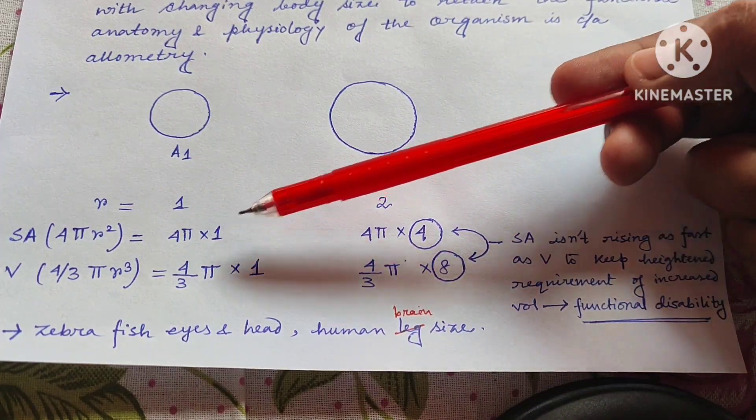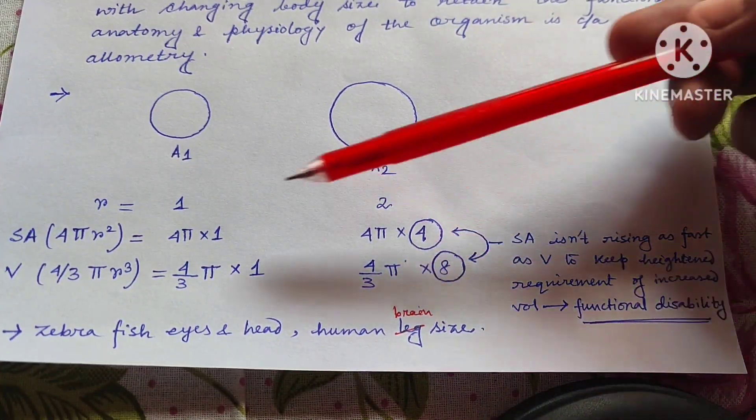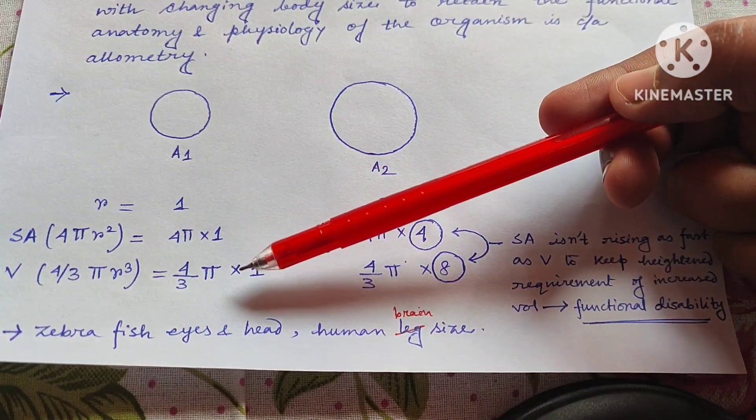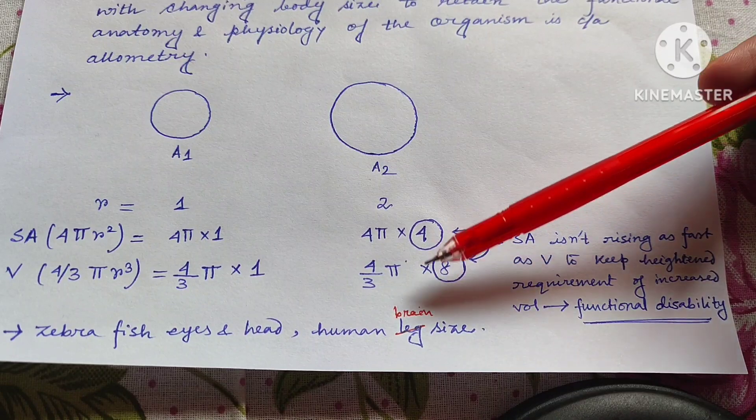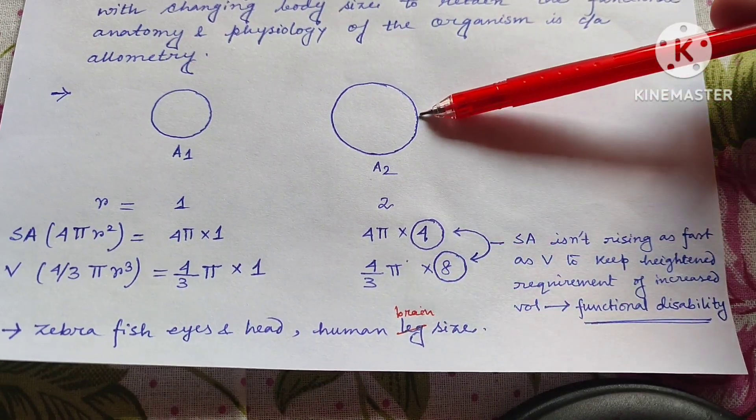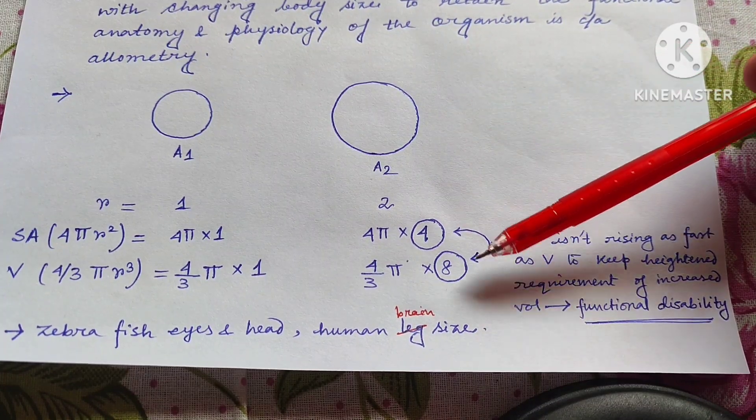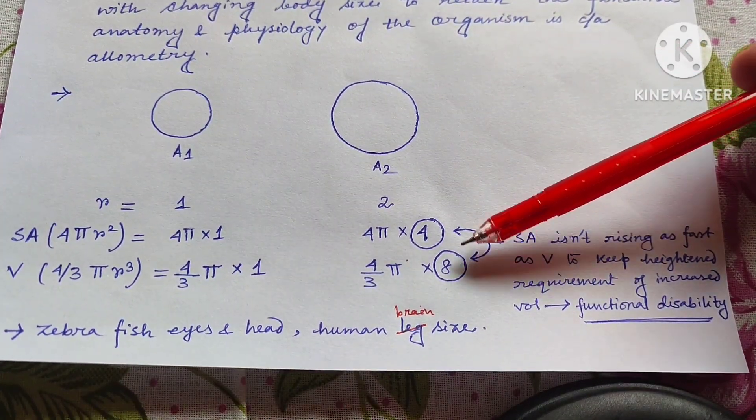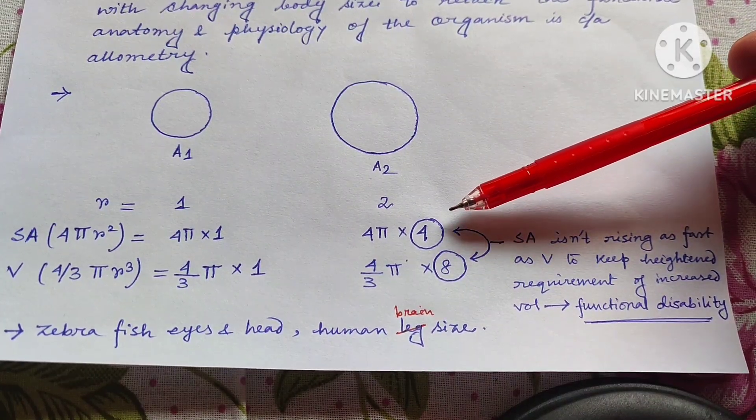According to that the surface area increases from 4 pi to 16 pi, that is 4 times greater. And volume increases from 4 by 3 pi to 4 by 3 pi into 8, that is 8 times greater. So here in this increased body size condition you can see that volume has increased 8 times, but surface area has increased only 4 times.